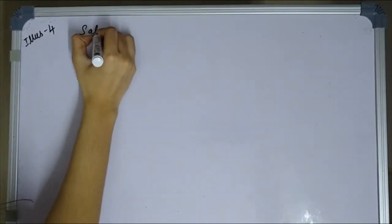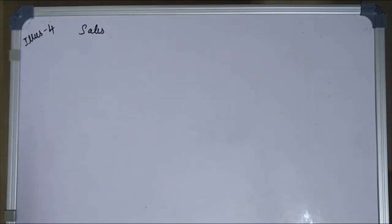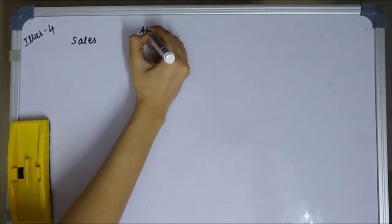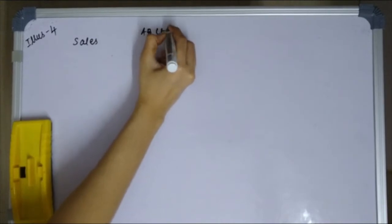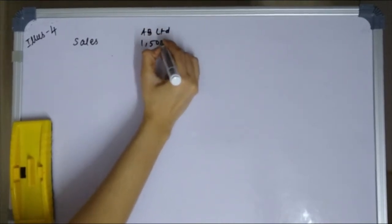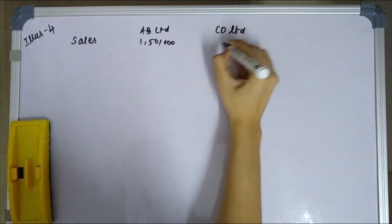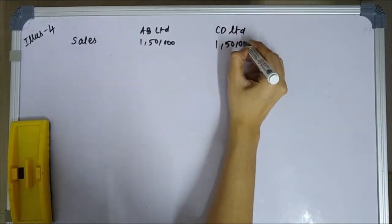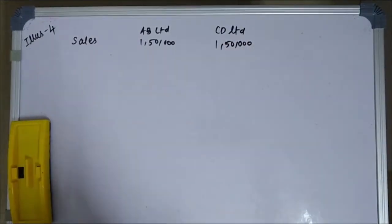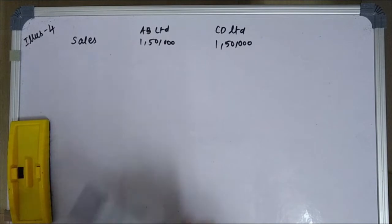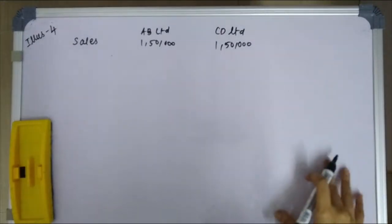Sales for AB limited $1,50,000, for CD limited $1,50,000. Next, what is the variable cost? Fixed cost. Profit.